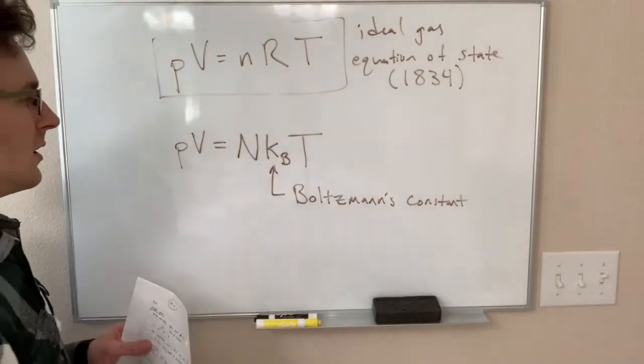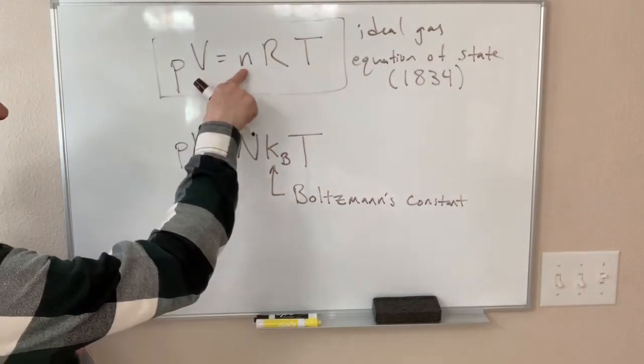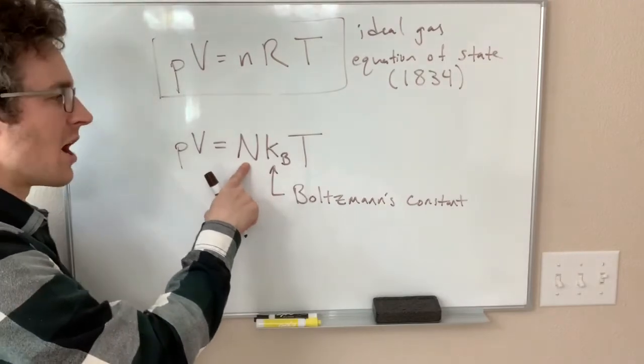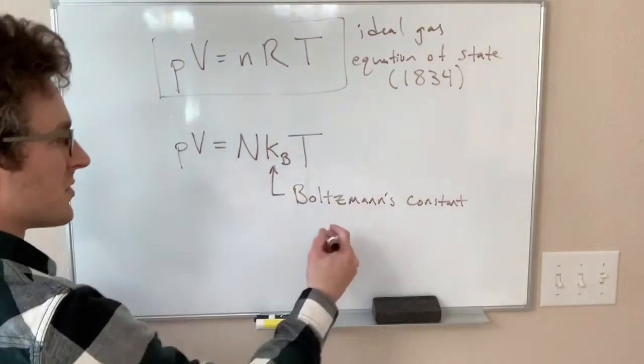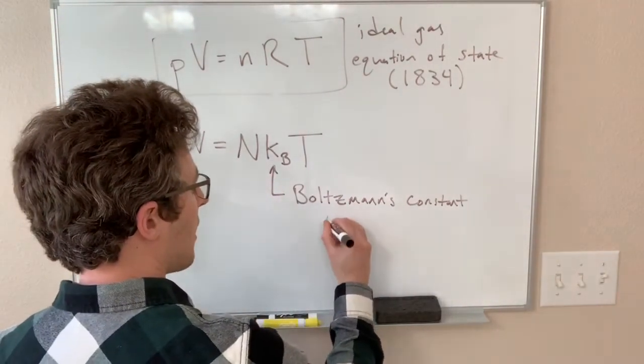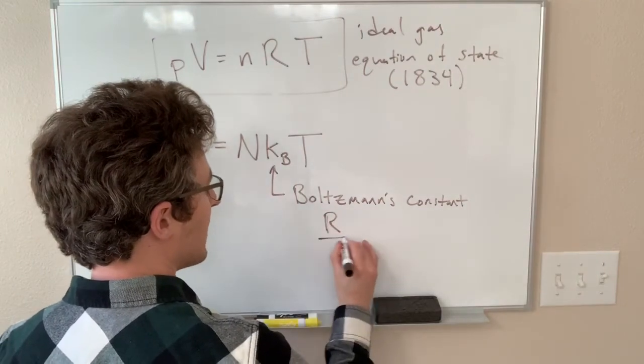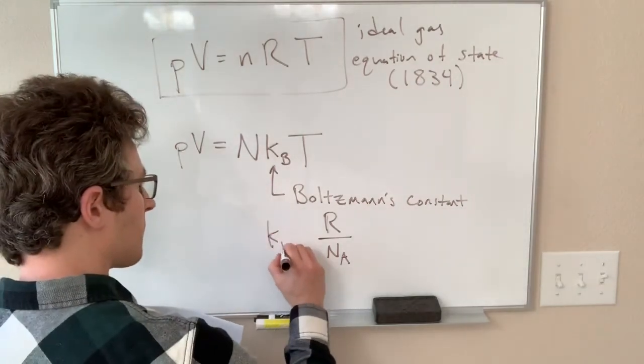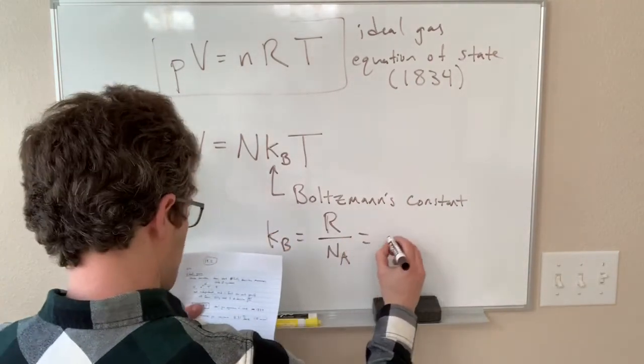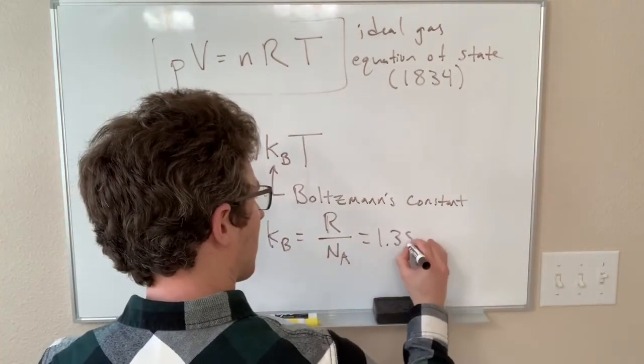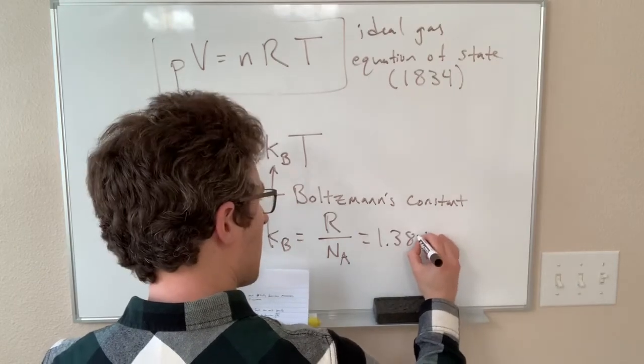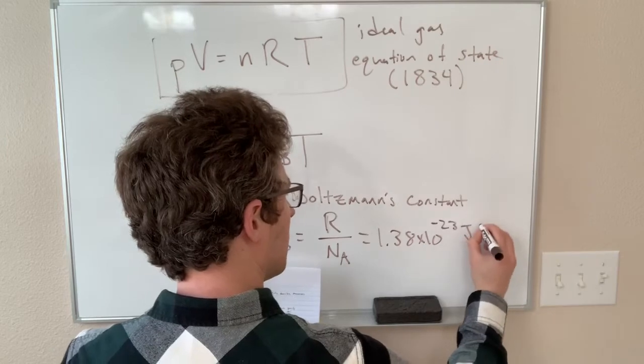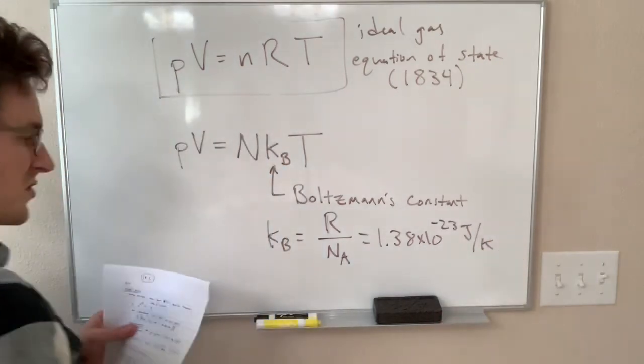Boltzmann's constant is, you can kind of figure out if we're going from number of moles to number of particles, there's an Avogadro's number in there somewhere. So, Boltzmann's constant is just the ideal gas constant divided by Avogadro's number, which is equal to 1.38 times 10 to the minus 23 joules per kelvin.